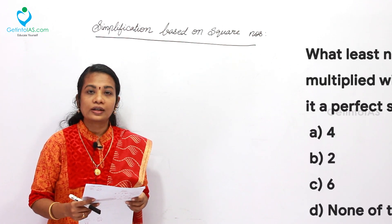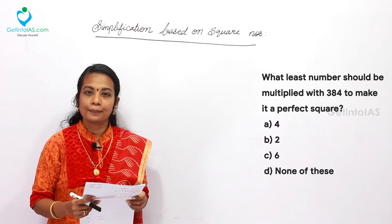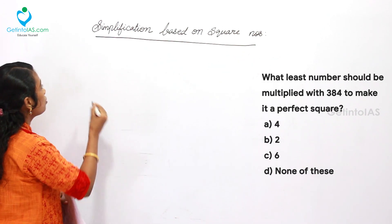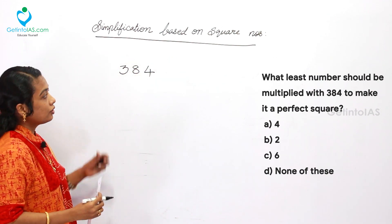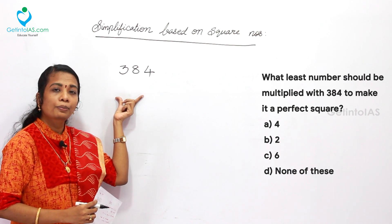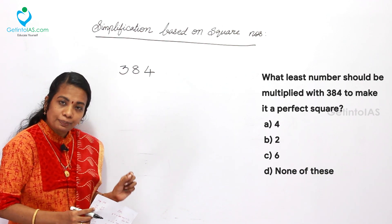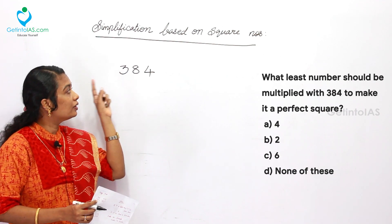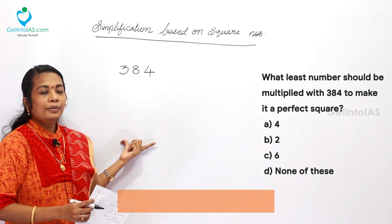The first question is: what least number should be multiplied with 384 to make it a perfect square? The options are 4, 6, and none of these. Here, you want to take the number 384 first. Generally, you will apply the factorization method to check whether a number is a perfect square or not. The question is asking you to find the least number to multiply with this number to make it a perfect square. Here also, you want to use the same method of factorization.